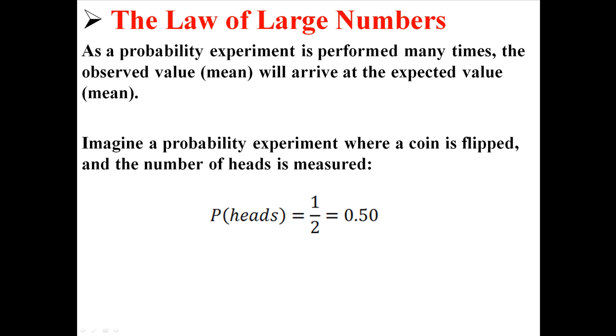Imagine a probability experiment where a coin is flipped and the number of heads is measured. If you flip a coin, the probability of getting heads is 1 out of 2, or about 0.50. There's a 50% chance that you will get heads.